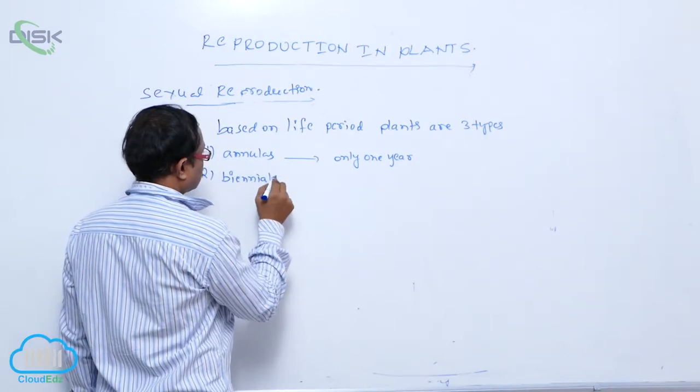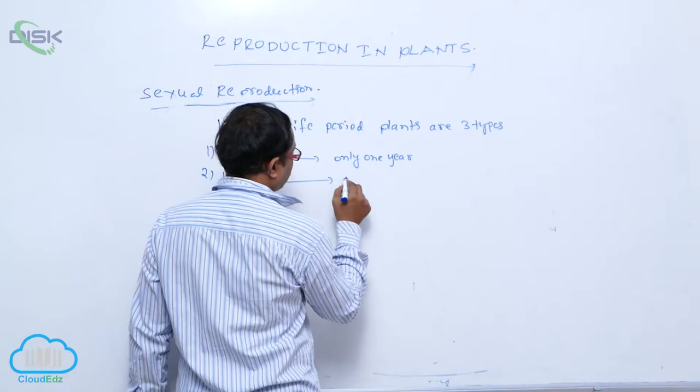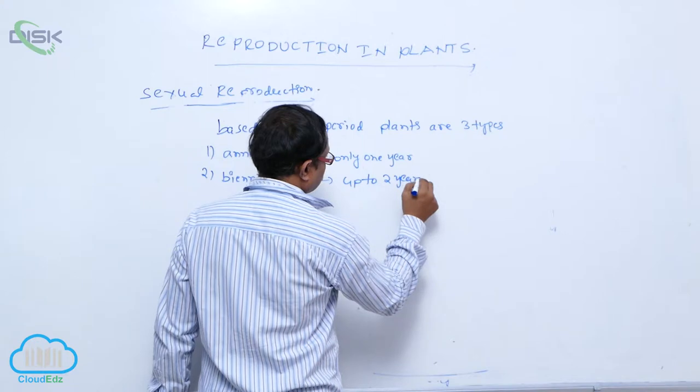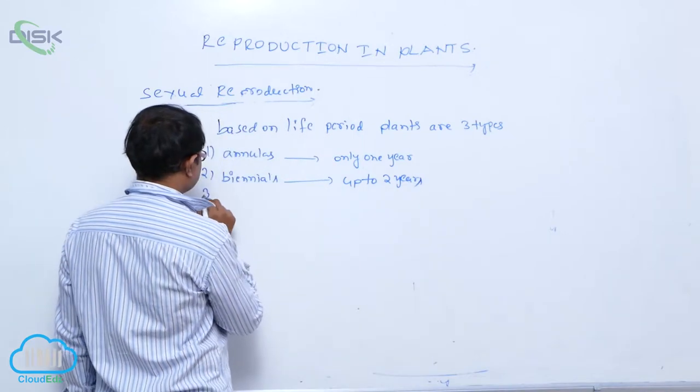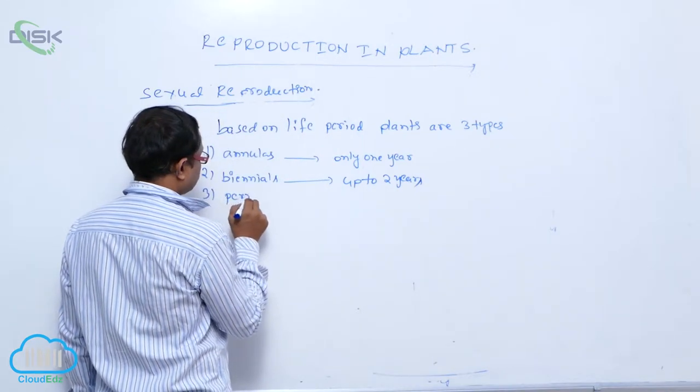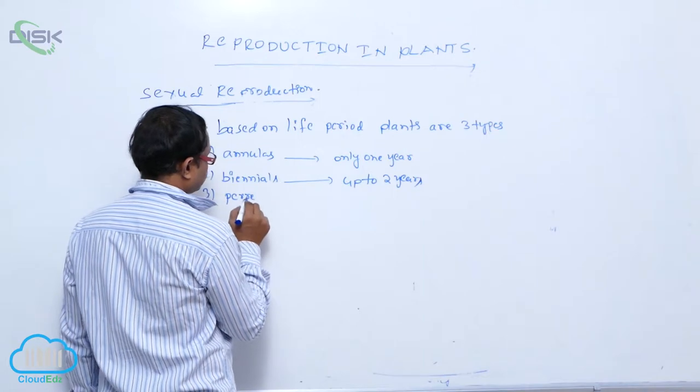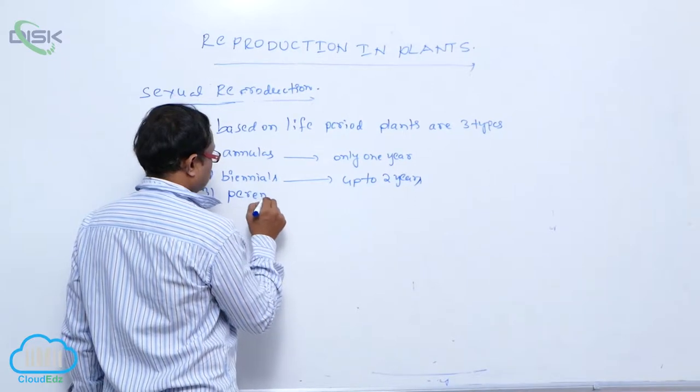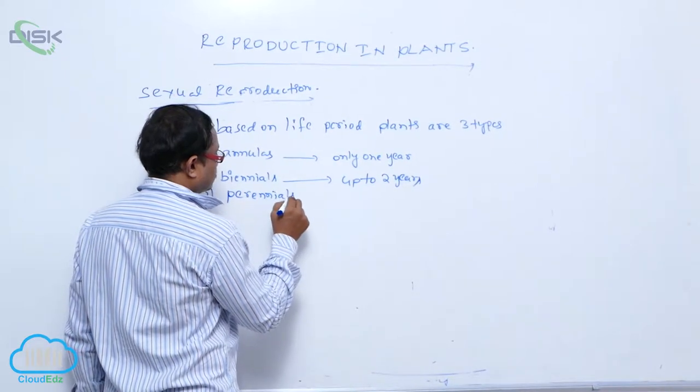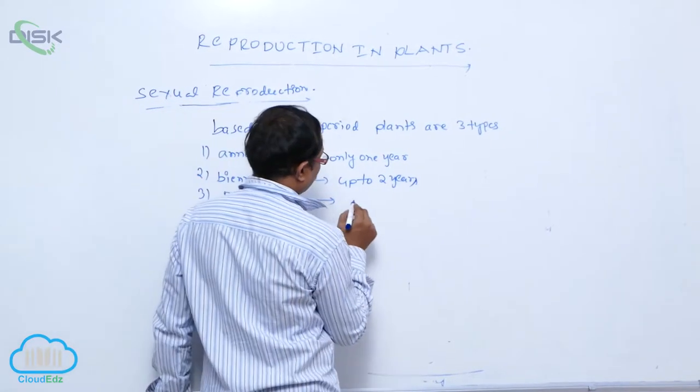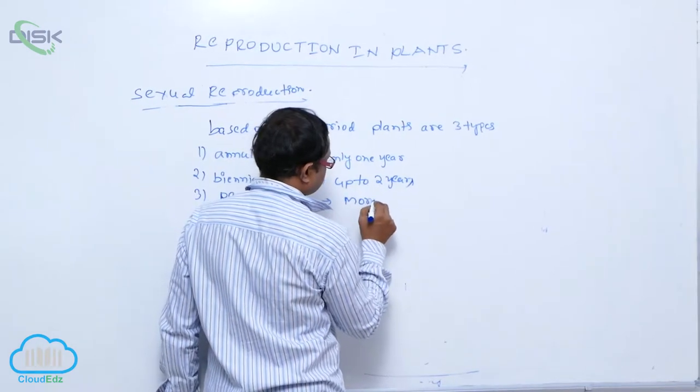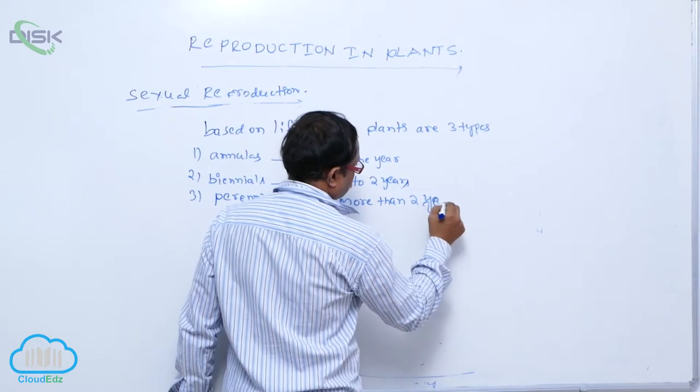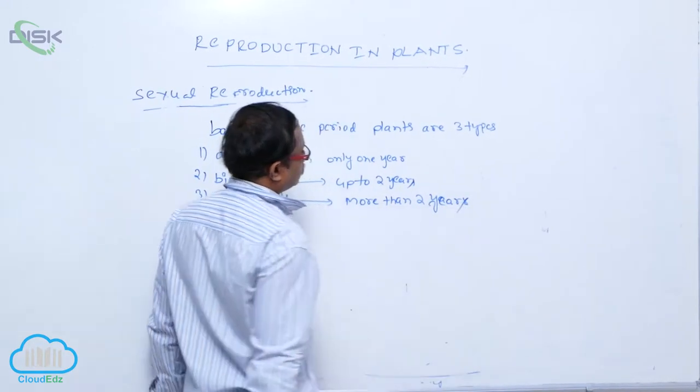Biennials can live up to two years. Perennials can live more than two years.